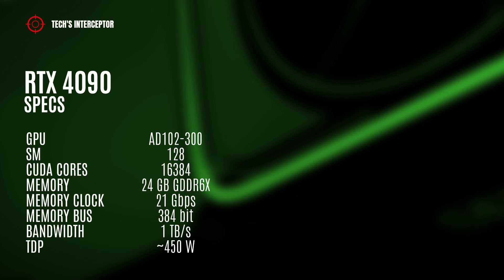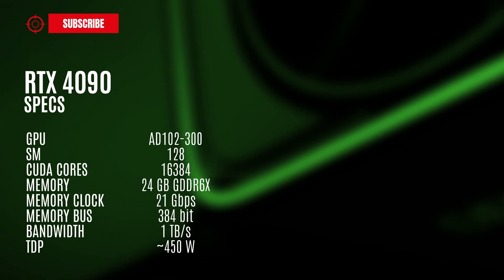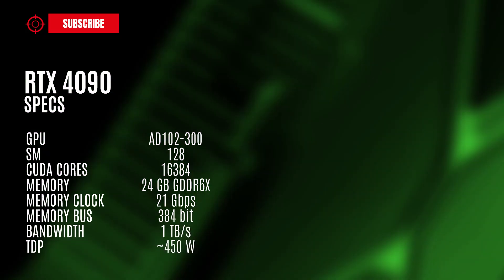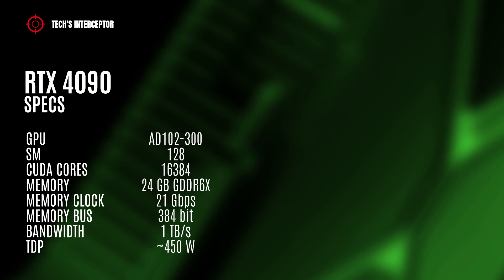So, recapping: we have the flagship RTX 4090, which should feature the full AD102-300 GPU with 128 streaming multiprocessors, 16,384 CUDA cores, 24 GB of GDDR6X memory operating at 21 GB per second, 384-bit memory bus and 1 TB per second of memory bandwidth, and a TDP of 450 watts.